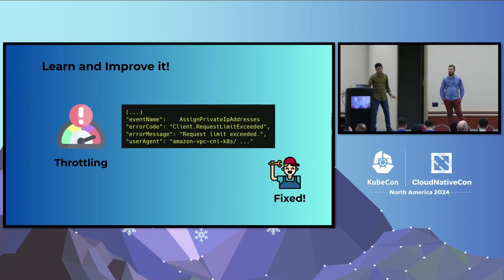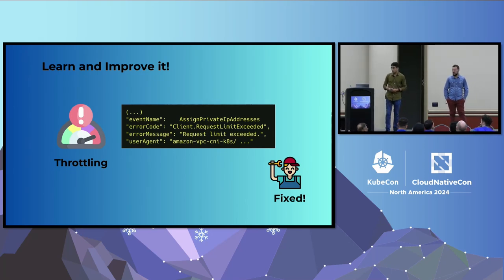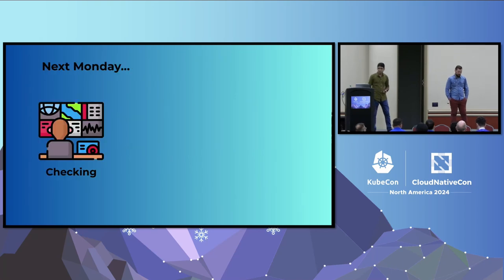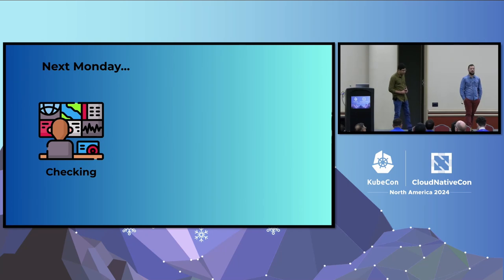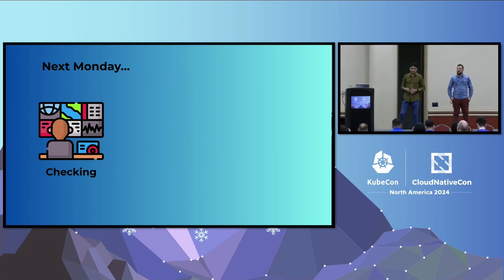After the limit increase and dashboard setup, we thought: okay, it's fixed. We're unlikely to hit those API limits anymore. So the next Monday, we were in front of the dashboard 30 minutes before the scheduled scale-up of worker nodes, and everything looked good.